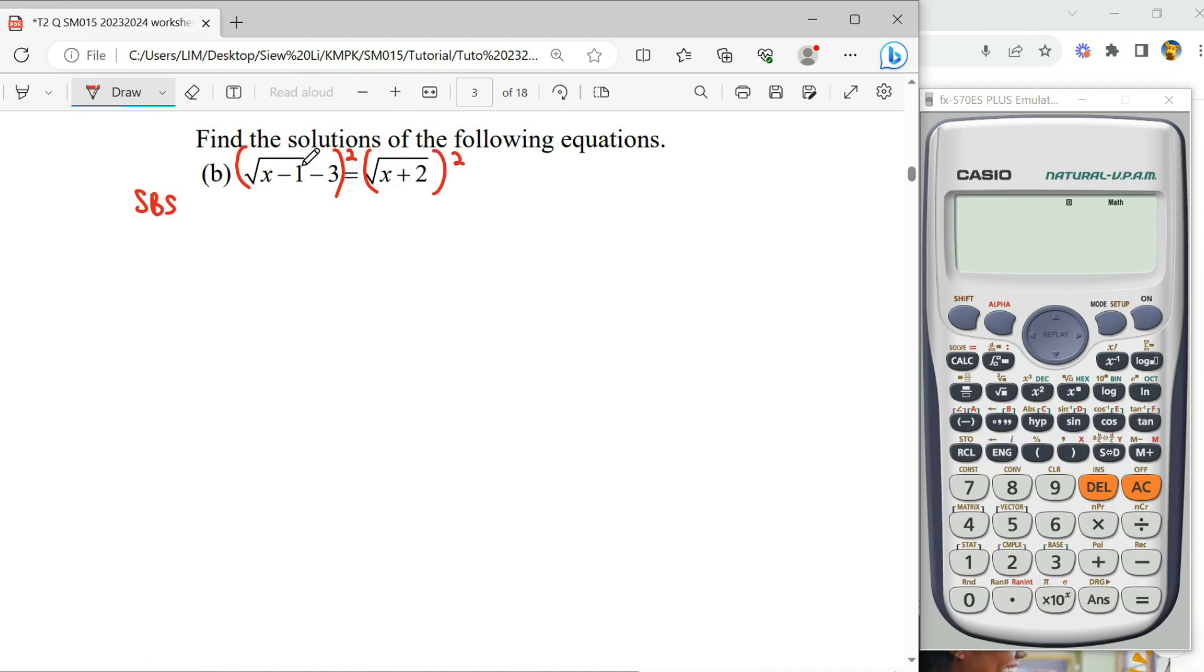For this square, you can see inside here, we have two terms, we have to expand one by one using the formula here. A plus B square equals to A square plus 2AB, B square.